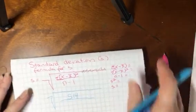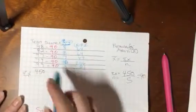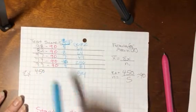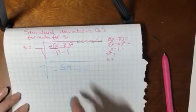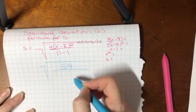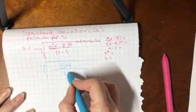And then we know the number of observations going back up here is 5. So down here in our denominator we want to do n minus 1 so 5 minus 1 is 4.